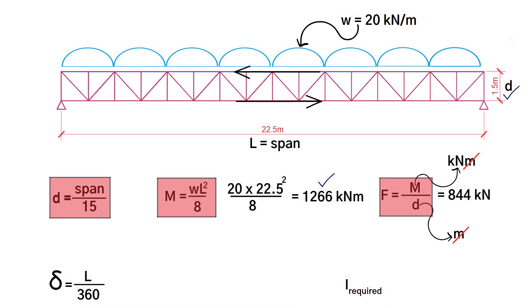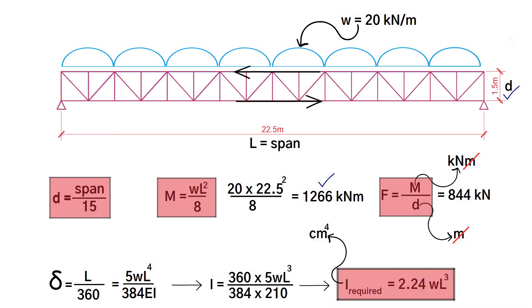The deflection formula for a simply supported truss is equal to this. To derive I, we take the Young's modulus of steel, 210 kN/mm². The I required would be 2.24 WL³. This formula gives you the output in cm⁴.